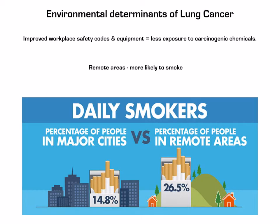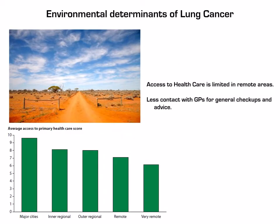The environmental determinants of lung cancer include improved workplace safety codes and equipment, which have led to less exposure to carcinogenic chemicals and a reduction in lung cancer. However, people in remote areas are more likely to smoke, leading to higher rates of lung cancer in rural and remote areas due to the disparity between major cities and remote regions. Access to healthcare is lower in very remote areas, and seeing a GP for advice to quit smoking is limited, which may contribute to increased smoking rates in those areas.